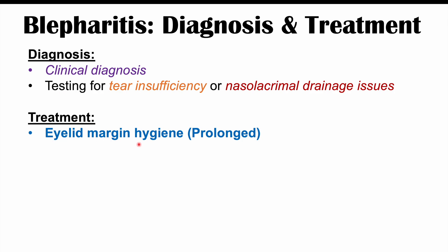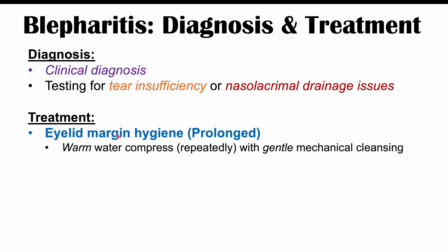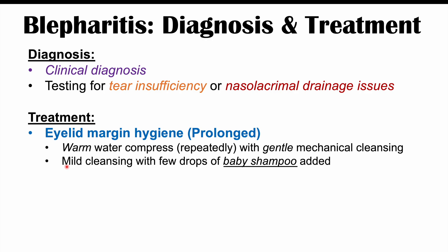Treatment involves eyelid margin hygiene, which is a prolonged course of treatment. The clinician teaches the patient to apply warm water compresses using gauze, a cotton swab, or a clean cloth, with gentle mechanical cleansing to remove any flakes or debris around the eyelashes. A few drops of baby shampoo mixed into the warm water can improve cleansing. It's important to use boiled or distilled water rather than tap water, and to avoid rigorous scrubbing — just gentle cleansing with water that is warm, not hot.